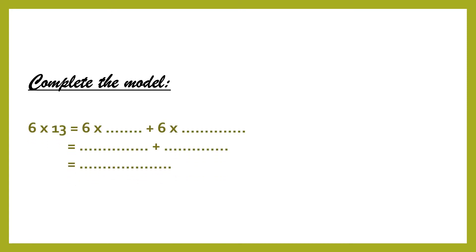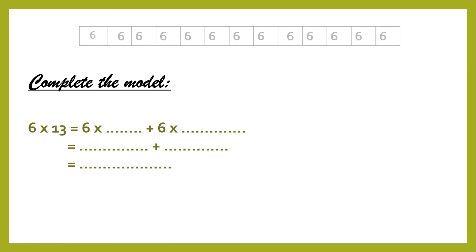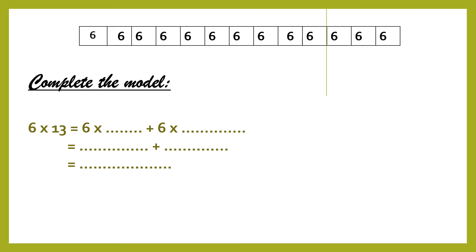Let's see this example: complete the model. 6 times 13 — we can break 13 into 10 plus 3. We have 10 groups of 6 and 3 groups of 6: 6 times 10 plus 6 times 3. 6 times 10 equals 60 and 6 times 3 equals 18. Then add the products: 60 plus 18 equals 78. So 6 times 13 equals 78.